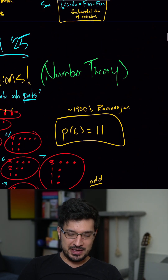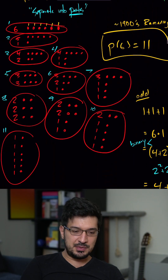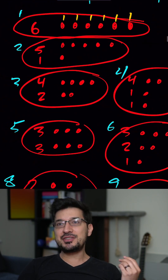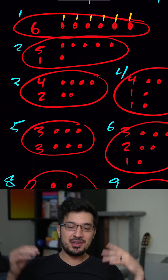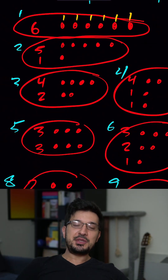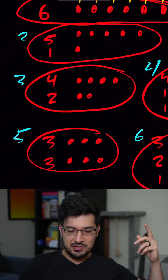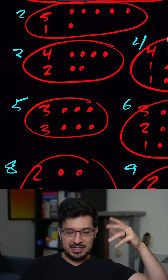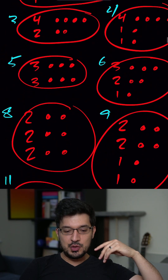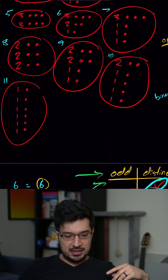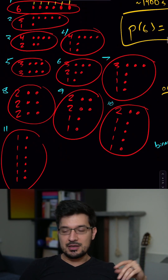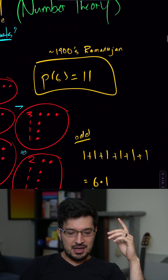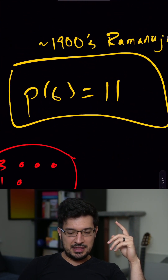Pause this video at any point if you want to try to understand what's going on. Basically, if you have a bunch of M&Ms, how many ways can you distribute those M&Ms? You can keep six for yourself, you can keep five and give one to a friend, you can keep four and give two to a friend, etc. It turns out that there are 11 ways to split up the number six, which we can write like this.